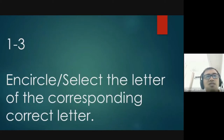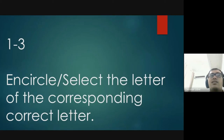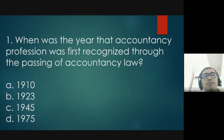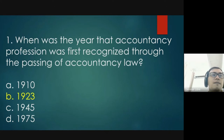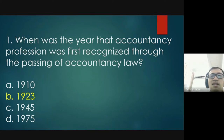Instruction: encircle or select the letter of the corresponding correct answer. Question number one: when was the year that the accountancy profession was first recognized through the passing of the accountancy law? The answer is letter B — 1923.